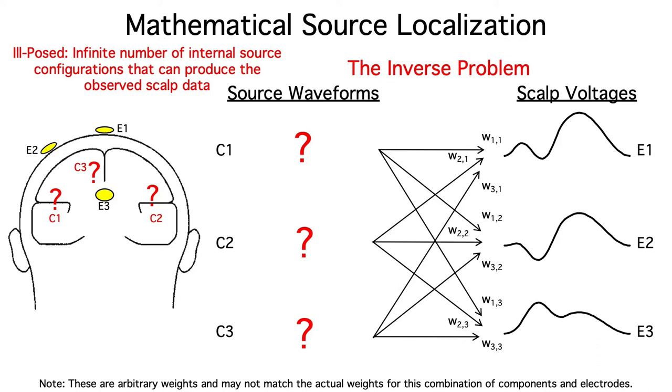To come up with a unique solution for a given observed dataset, we would need to include additional constraints. Many different algorithms have been proposed for solving the inverse problem, and they all involve applying different constraints.